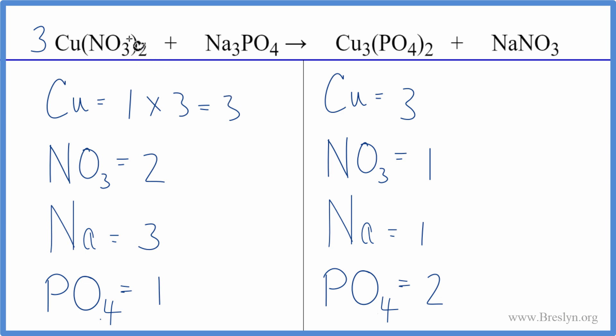Then we have the one nitrate times two. So we have two of those times the three. We have six nitrate ions.